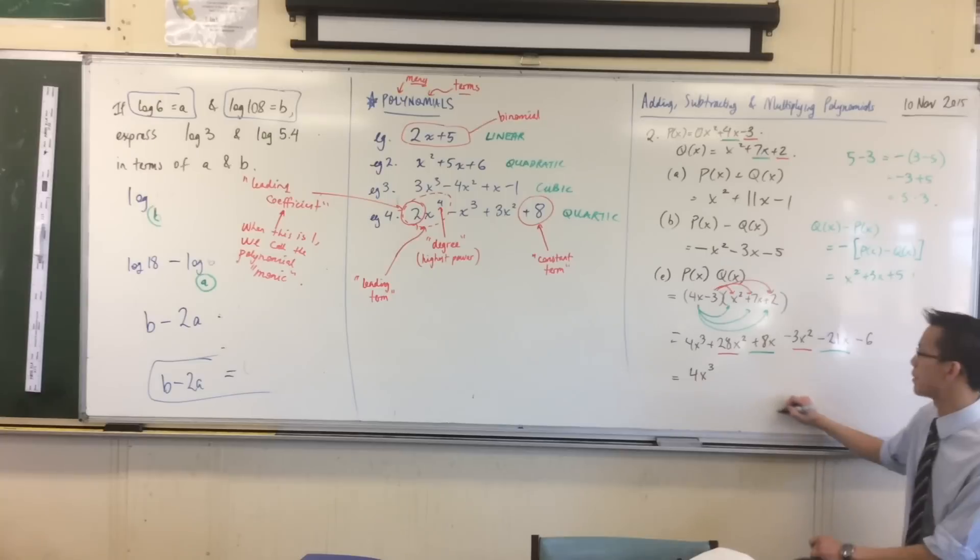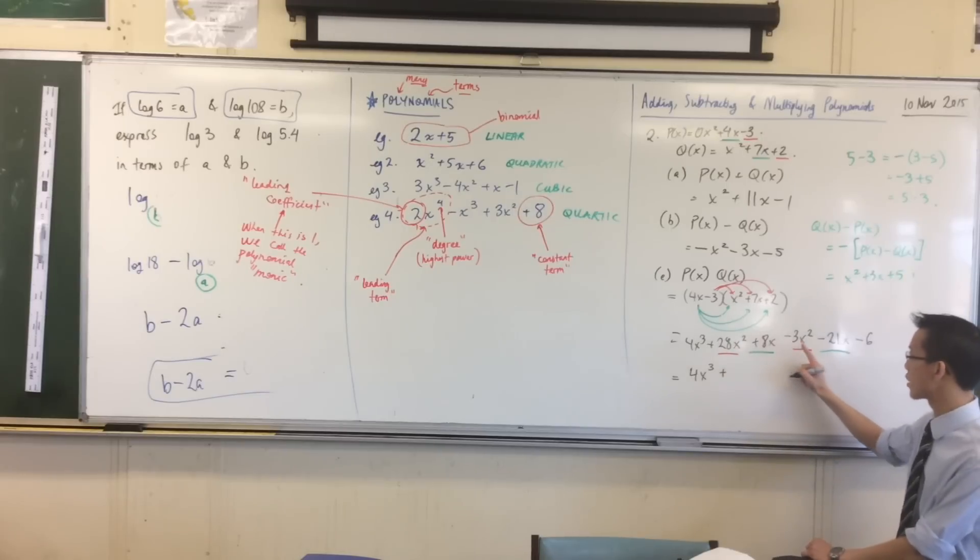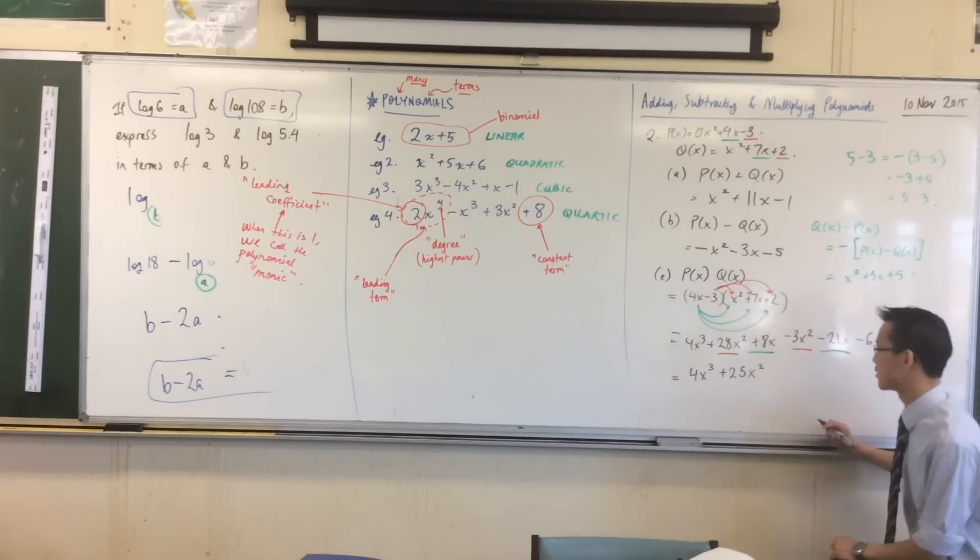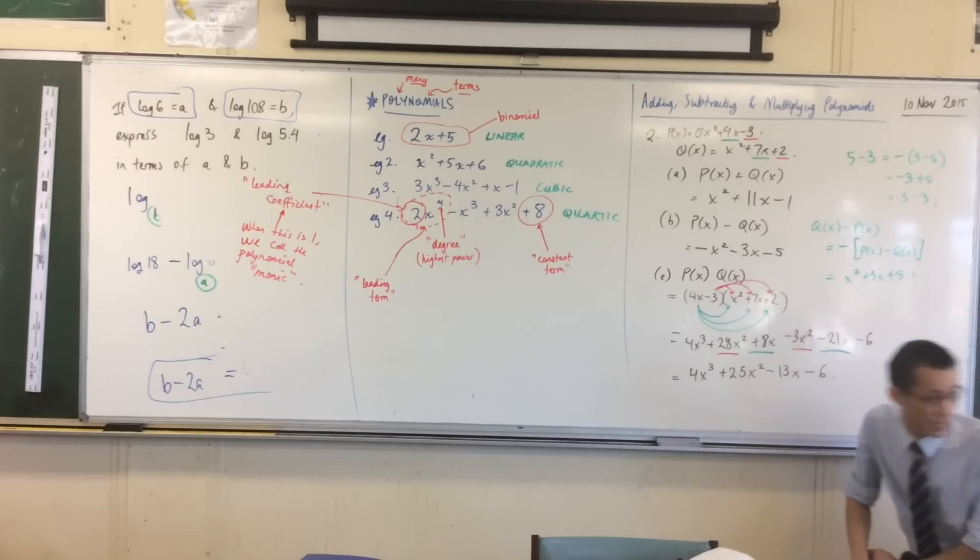4x cubed, how many x squareds will I have in total? 28 take away 3, which is 25. 8 take away 21 is negative 13, so minus 13x, and then we already mentioned that that constant was hanging out at the end.